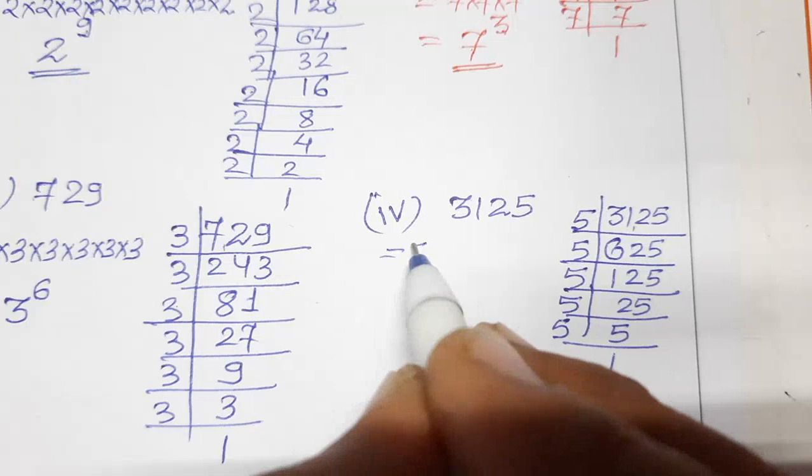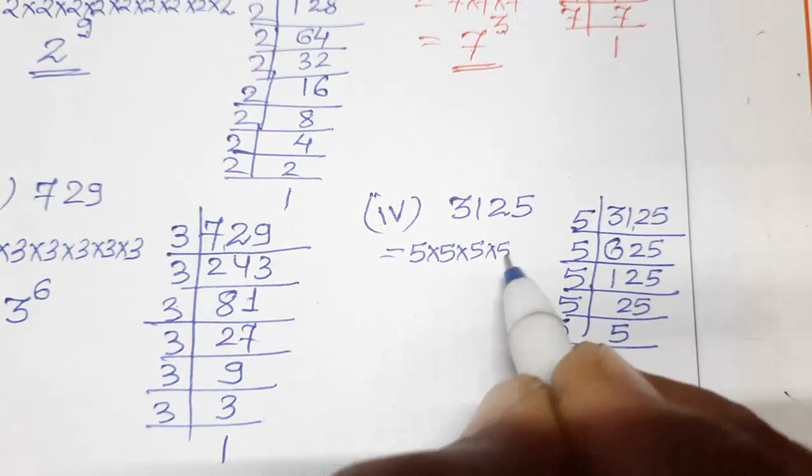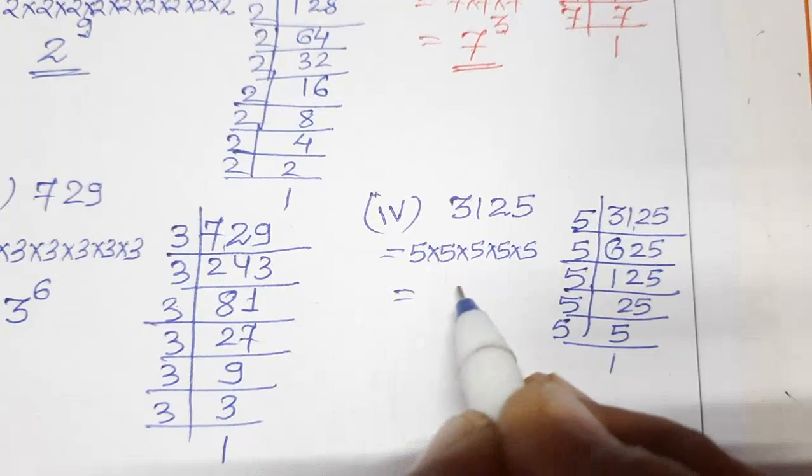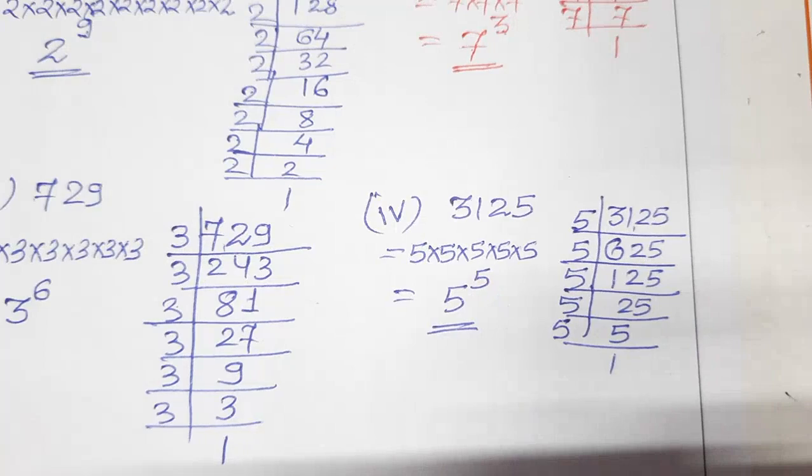So 3125 can be written as 5, 1, 2, 3, 4, and 5 times. That means we can write 5 raised to the power 5. So these are in exponential form. We have done all the 4 parts.